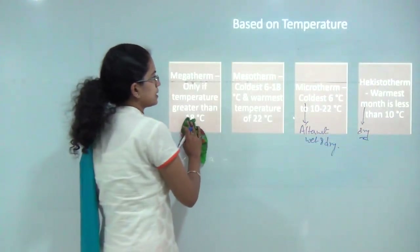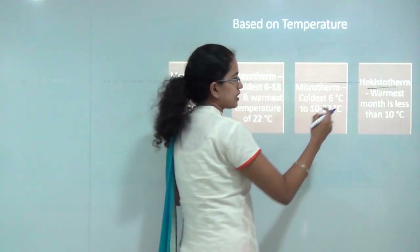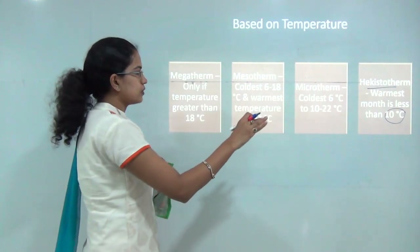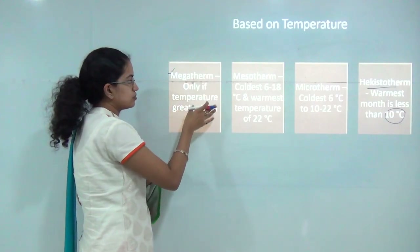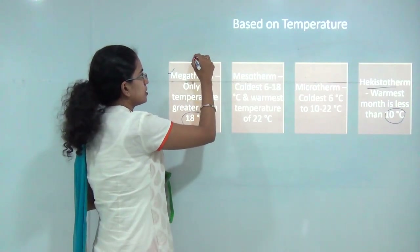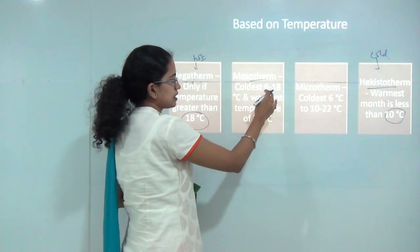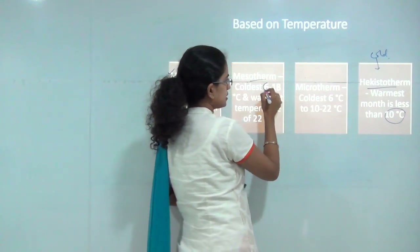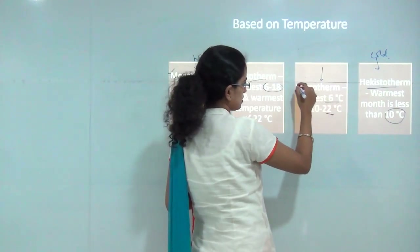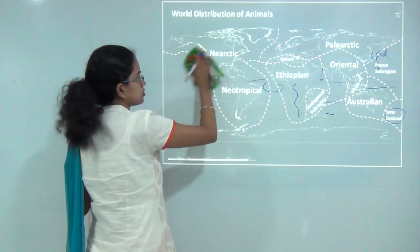Based on temperature, plants are again divided into four categories. Hygrophytes grow in cold areas and cannot tolerate temperatures above 10°C. Megatherms grow only where temperature exceeds 18°C. Mesotherms have a range of roughly 6 to 18°C. Microtherms cannot tolerate temperatures below 6°C or above 22°C, giving them a narrower range.